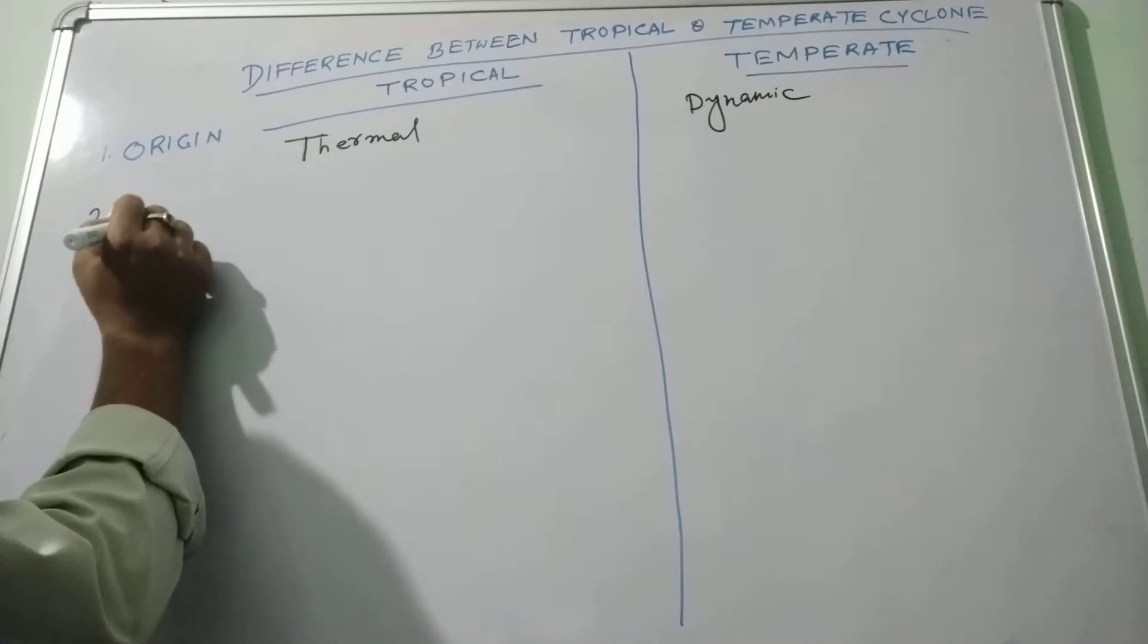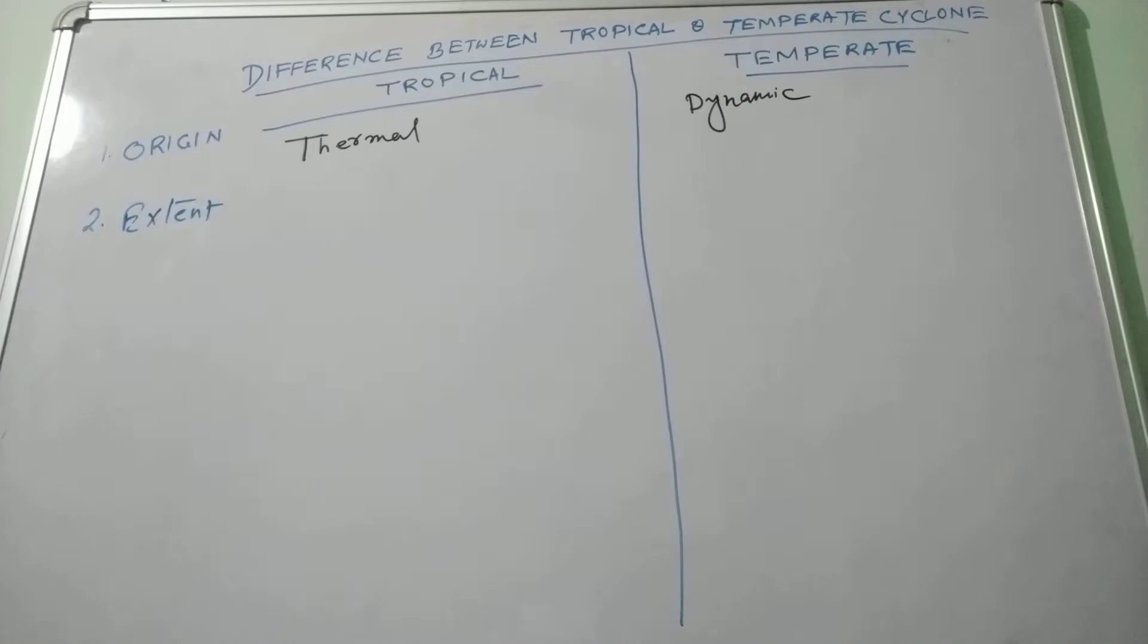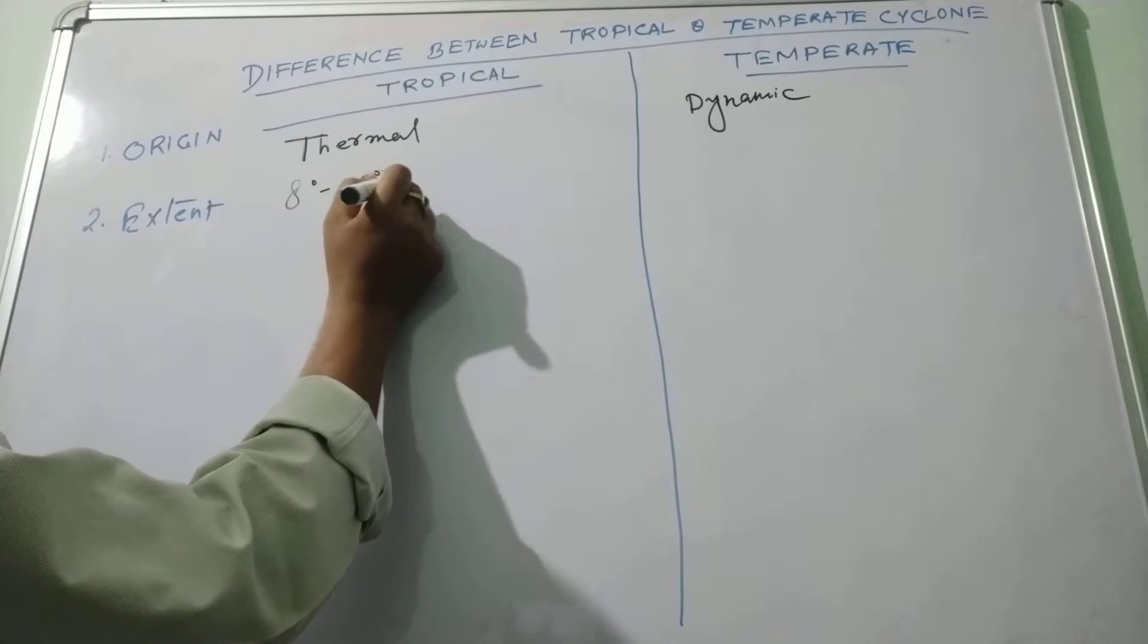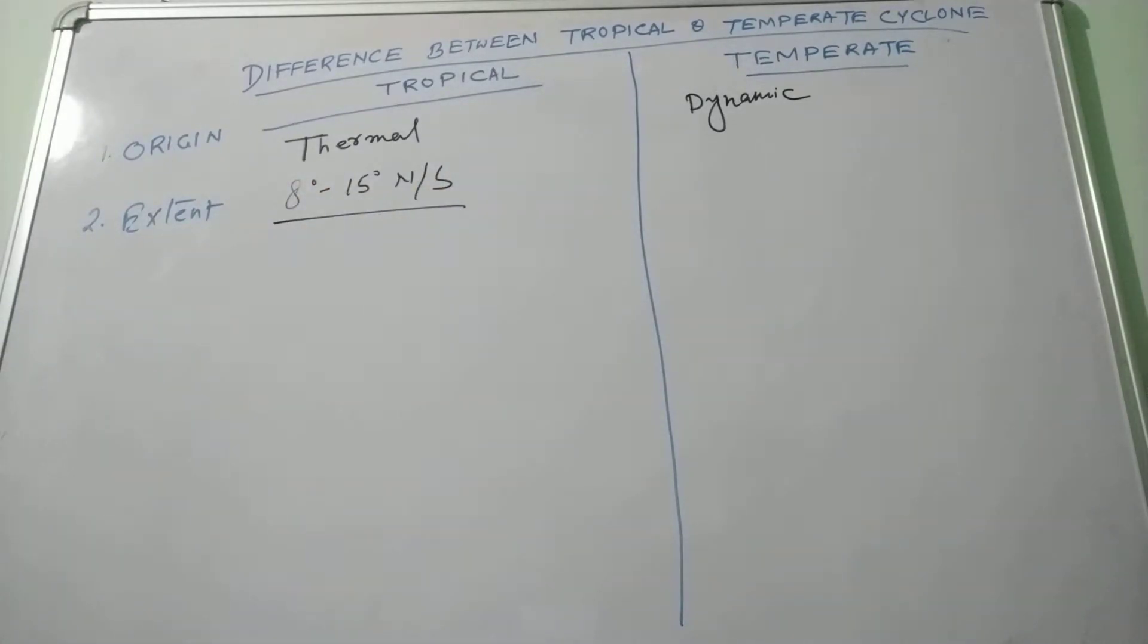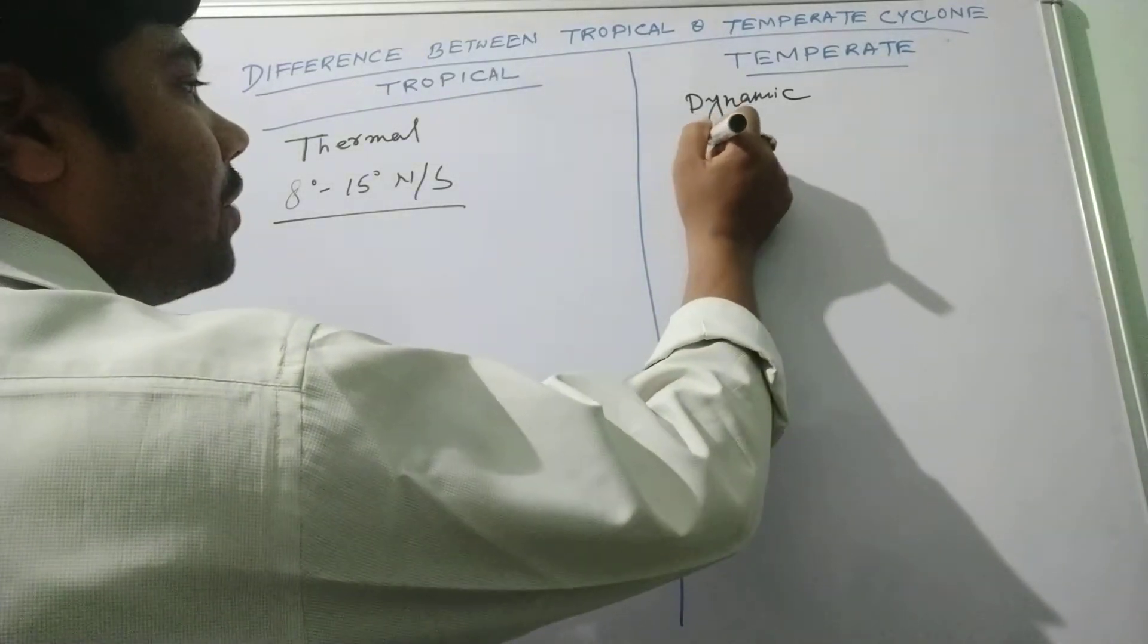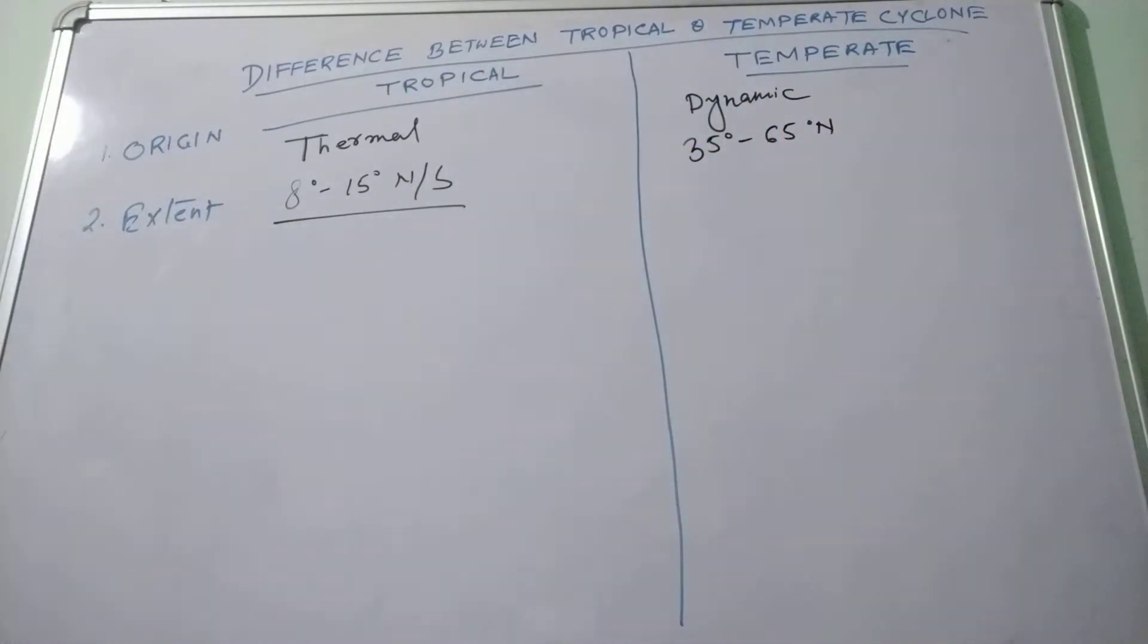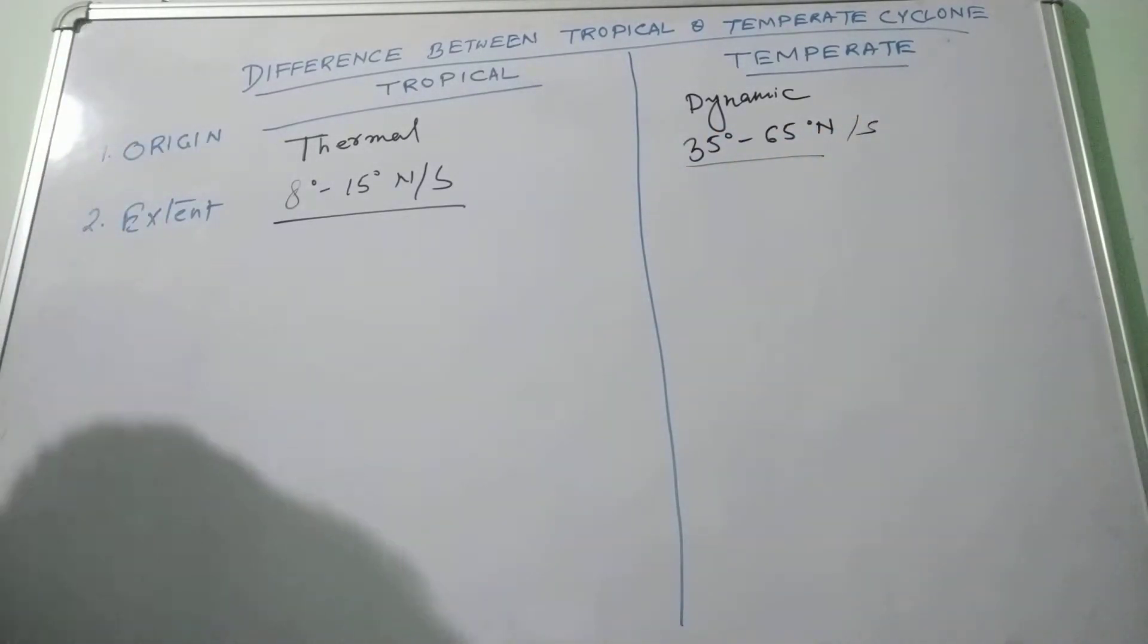Second, extent. It is confined between the latitude of 8 degree to 15 degree north and south. Whereas temperate cyclone is confined between 35 degree to 65 degree north latitude and south latitude. However, these are more pronounced in the northern hemisphere in comparison to the southern hemisphere.